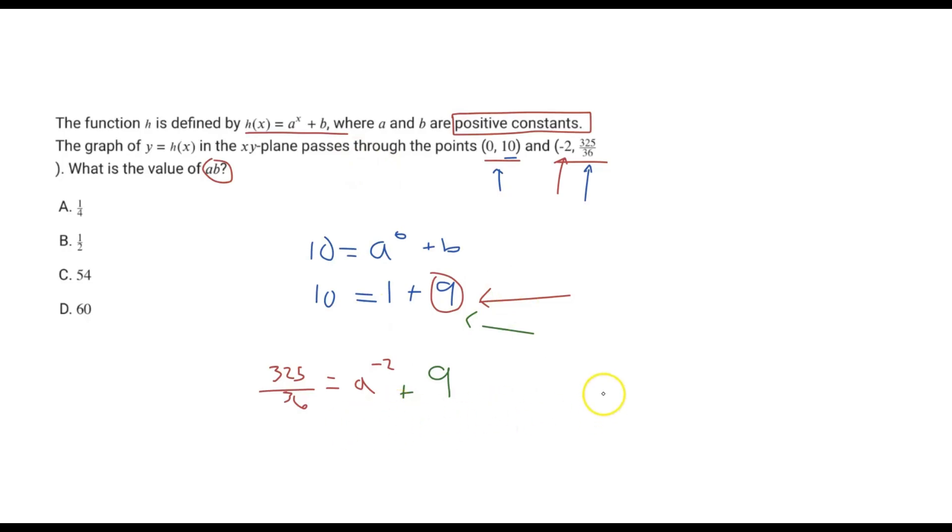Now what we want to do is just solve for a. We can subtract 9 on both sides. This is actually interesting because 325/36, 9 times 36 is going to give us 324. So when we subtract 9 on both sides, that's in reality just subtracting 324/36.